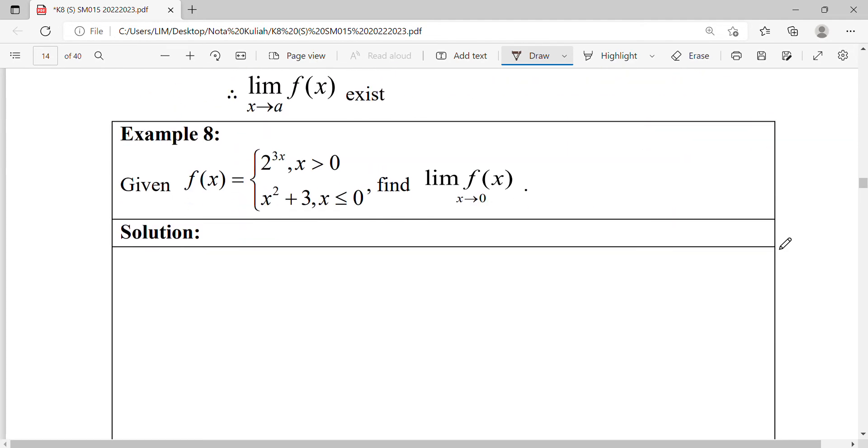Okay, we look at this example. We're given a piecewise function. To visualize the position of the interval, we draw out where you have the changing of the function when x equals zero. When x is more than zero, this function is 2 to the power of 3x. When x is less than zero, this function here is quadratic. So you can see the coordinate.